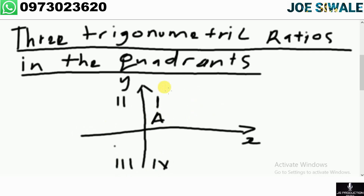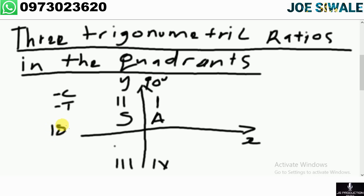The angles in the first quadrant go up to 90 degrees. In the second quadrant, sine is positive, which means cosine is negative and tan is negative. The angles in the second quadrant go up to 180 degrees. In the third quadrant, tan is positive, which means sine is negative and cosine is negative.